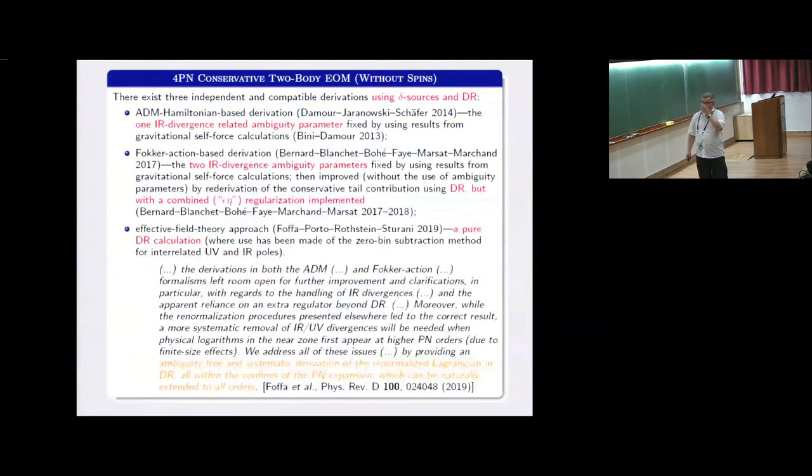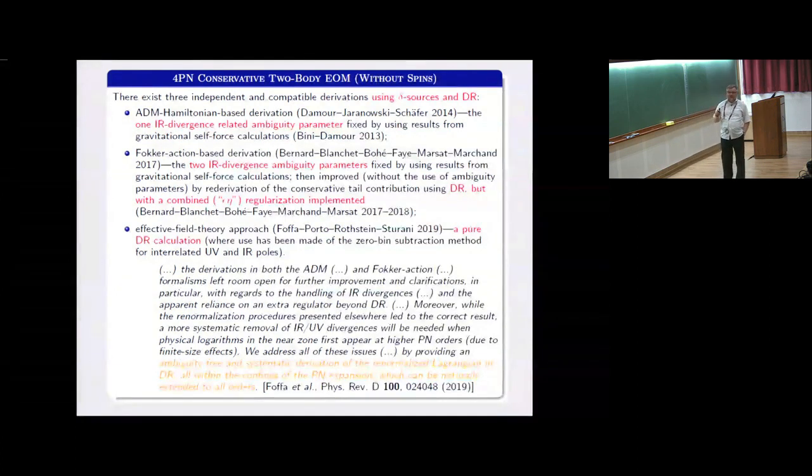And as I said a few times already, there are also three independent derivations of the 4 post-Newtonian dynamics. The very recent derivation was done by group related with effective field theory approach. And this is the excerpt from the recent paper. They are very optimistic because in the introduction they concluded that they provide an ambiguity-free and systematic derivation of the renormalized Lagrangian in dimensional regularization, all within the confines of the post-Newtonian expansion, which can be naturally extended to all orders. This is to some extent answer to Satya's question that they are quite optimistic.